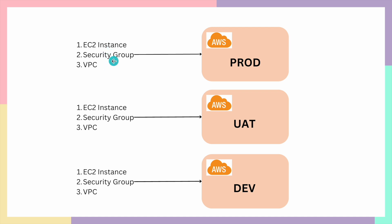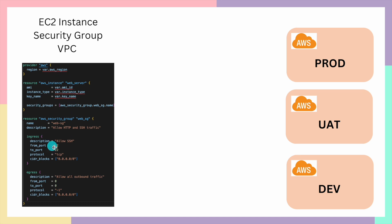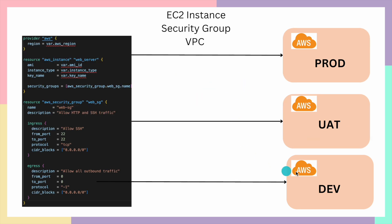You need to create the same type of instance, define the same security group rules, and avoid the redundancy of doing this again and again in different environments. What if you could write a piece of code, define these resources in that code, and run it across all environments — dev, UAT, and prod — to create the same set of resources with similar configurations? If you wanted to update, say, increase the EC2 instance size, you'd just update the code and run it across all environments.